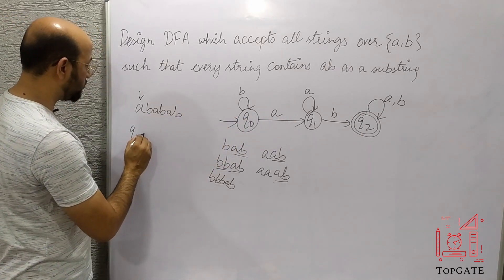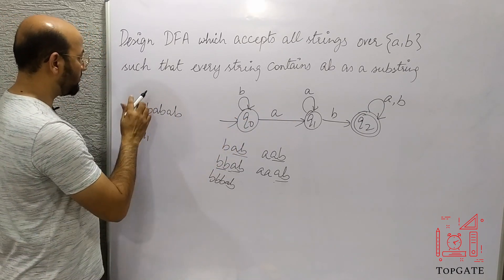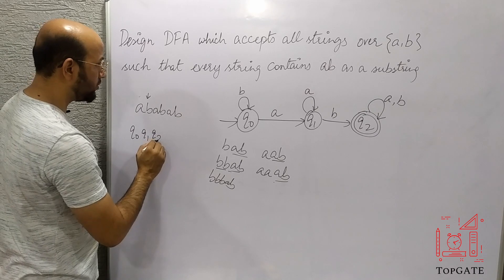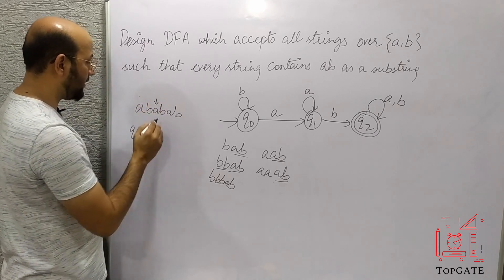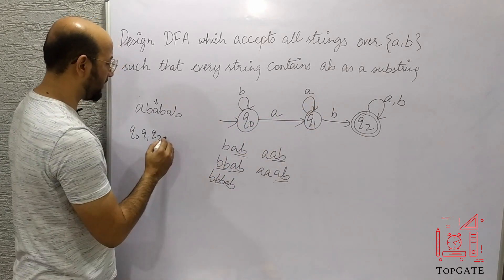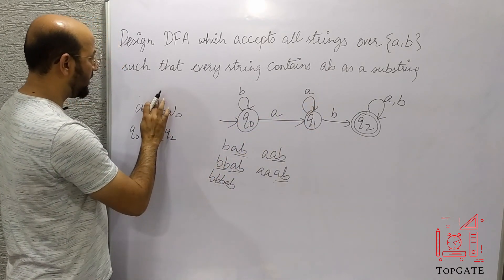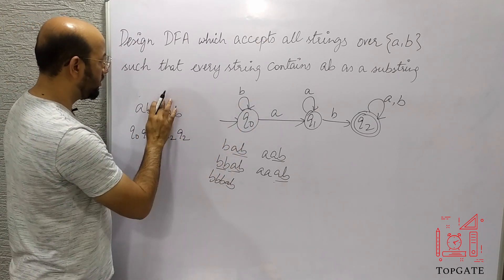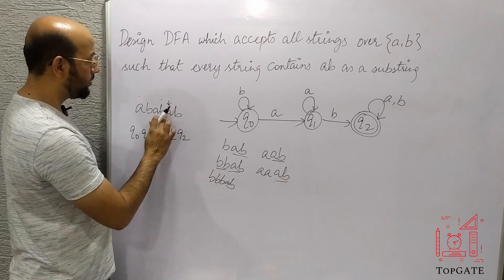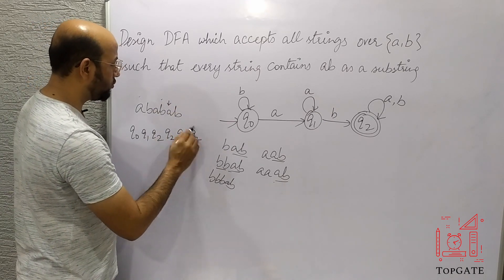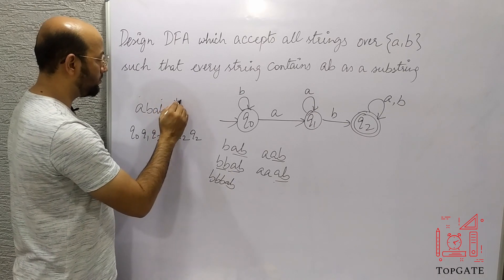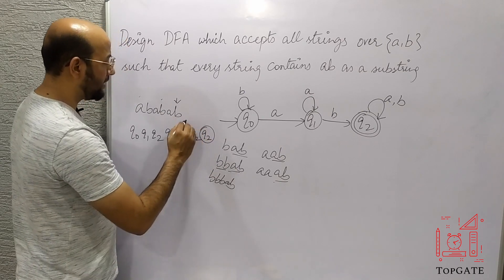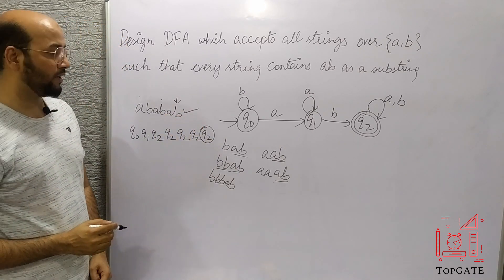At q0, 'a' is applied — I move to state q1. Pointer moves to 'b'. At q1, 'b' is applied — I move to state q2. Pointer moves to 'a'. At q2, 'a' is applied — I stay at q2. Pointer moves to 'b'. At q2, 'b' is applied — I stay at q2. Pointer moves to 'a'. At q2, 'a' is applied — I stay at q2. Pointer moves to 'b'. At q2, 'b' is applied — I stay at q2, which is my final state. Therefore this string is accepted by this DFA.